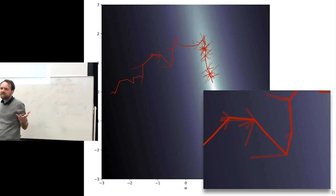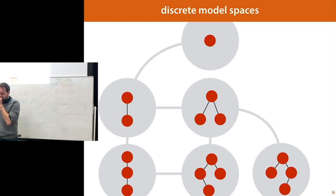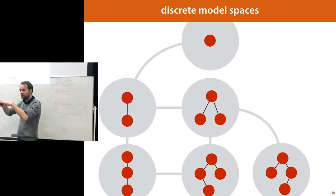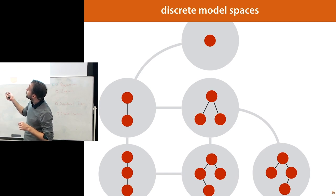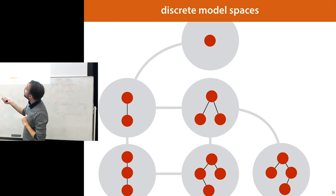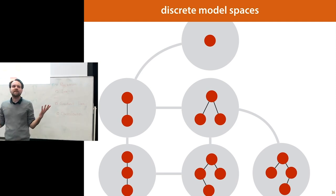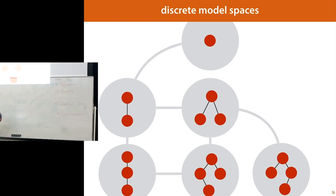If you have a discrete model space like these three models, the space of all your models is not a Euclidean space but a discrete space — it looks like a graph. You can still do random search but you need a transition function — a step that takes you from one model to another. In this case, I've connected all trees where you can get from one to another by deleting or adding a node. These gray circles are the model space, and if you randomly walk over them you do a random search over your discrete model space.